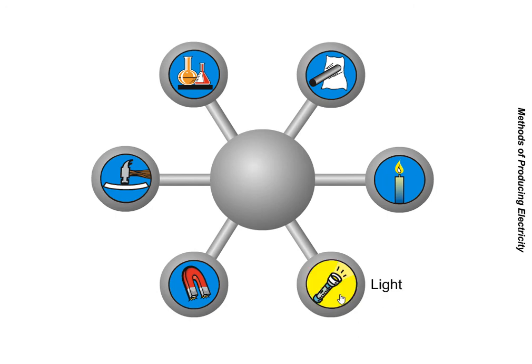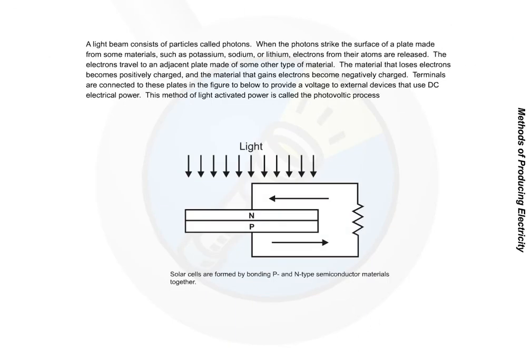Light. A light beam consists of particles called photons. When the photons strike the surface of a plate made from some materials such as potassium, sodium, or lithium, electrons from their atoms are released. The electrons travel to an adjacent plate made of some other type of material.